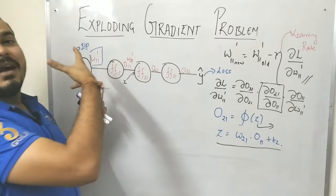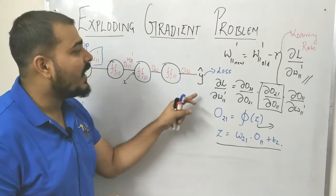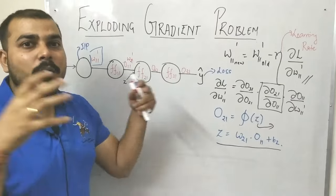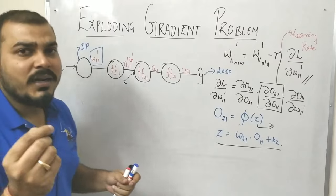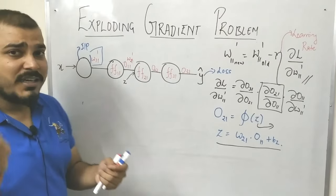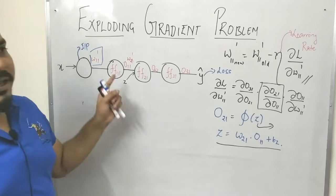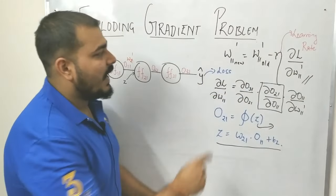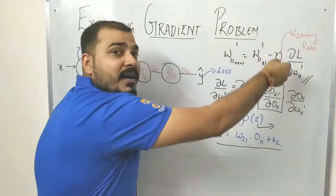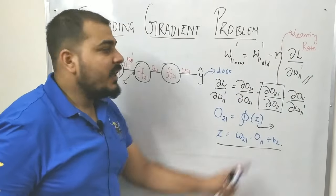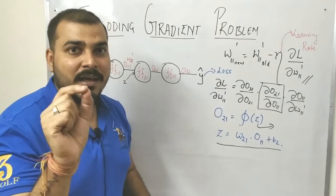Each and every weight gets updated until the loss value is reduced. When the loss value is reduced, y-hat and y (your actual data) will have equal values. Now let's understand how weight updation happens. Suppose I want to update w11 — I can write the weight updation formula as: w11_new = w11_old − learning_rate × (derivative of L with respect to the weights).